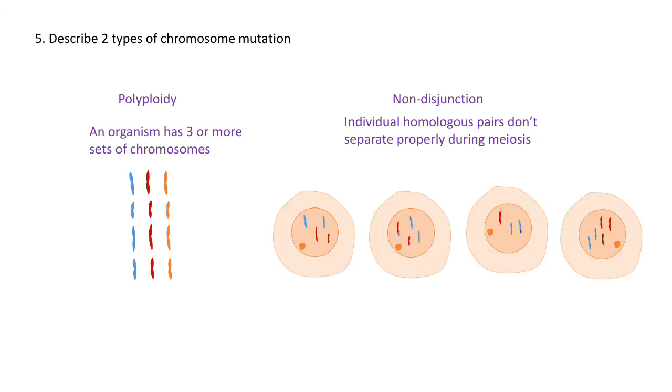The second type of chromosome mutation is non-disjunction. I'm showing our example of our gametes, and you'll notice in the gametes that have been circled, one of the gametes has one less chromosome and one has an extra chromosome.